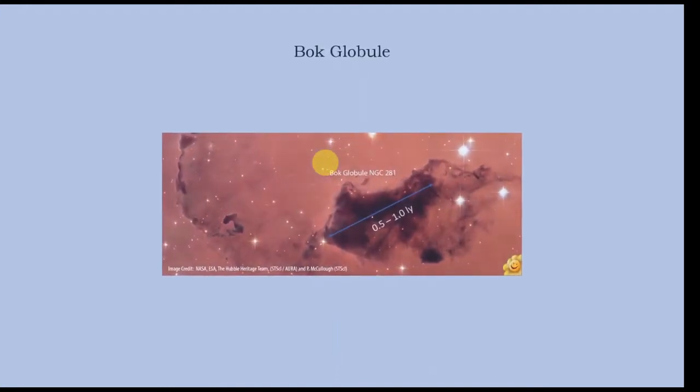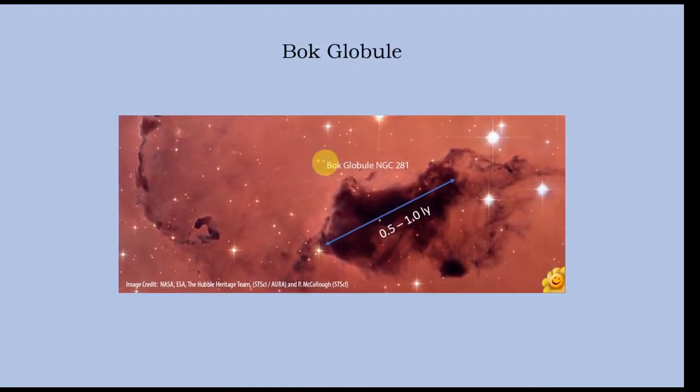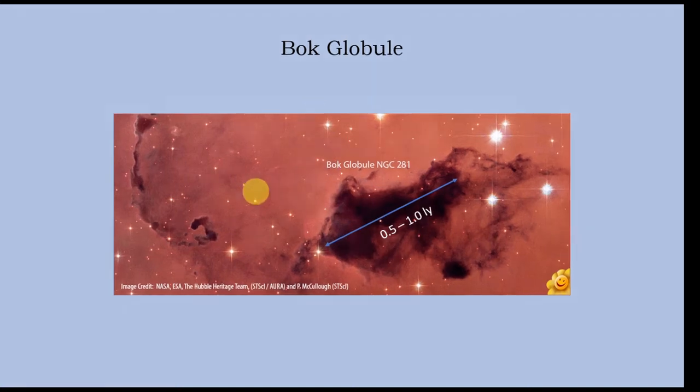In addition to these giant molecular clouds, you also have much smaller clouds discovered in the 1950s, called Bok Globules. These are also clouds of gas and dust but their diameters are much smaller — ranging from about 0.5 to about one light year — and these are also nurseries of star formation, or rather places where stars are formed.